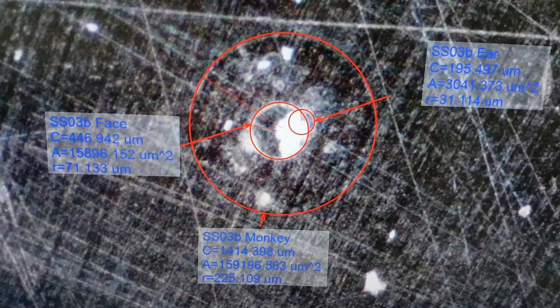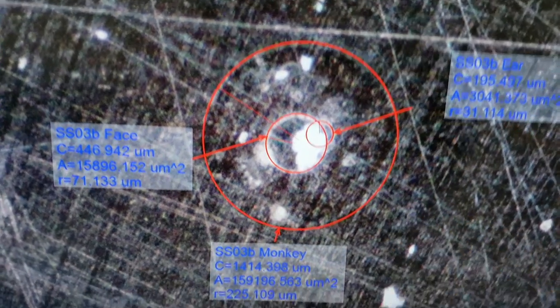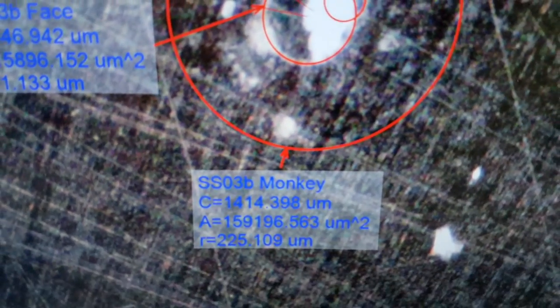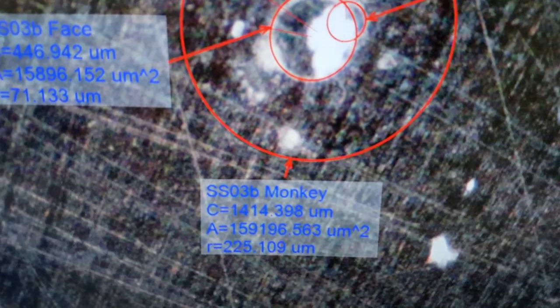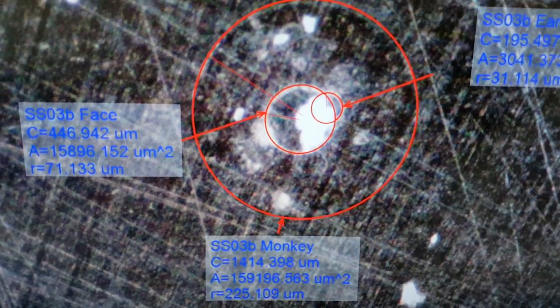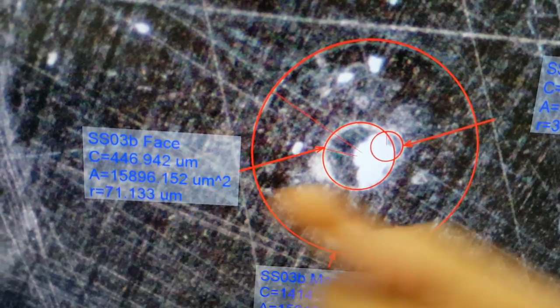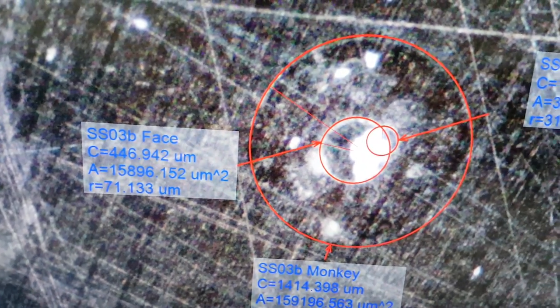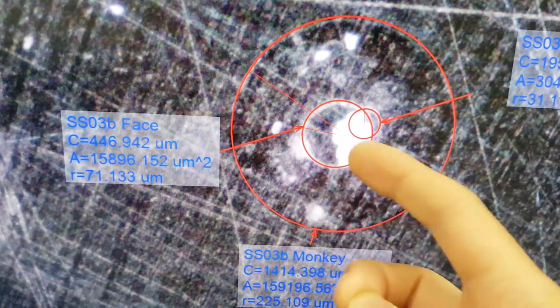The outer ring is radius 225 microns so it's actually half a millimeter diameter. The face is 71 radius so that's 142 micrometers diameter.